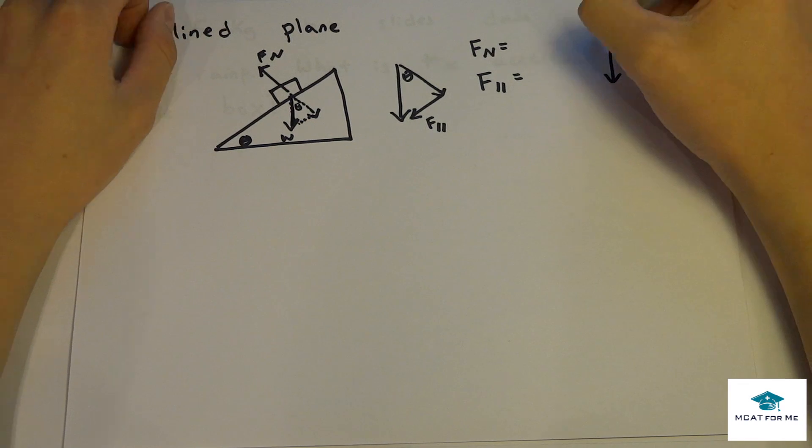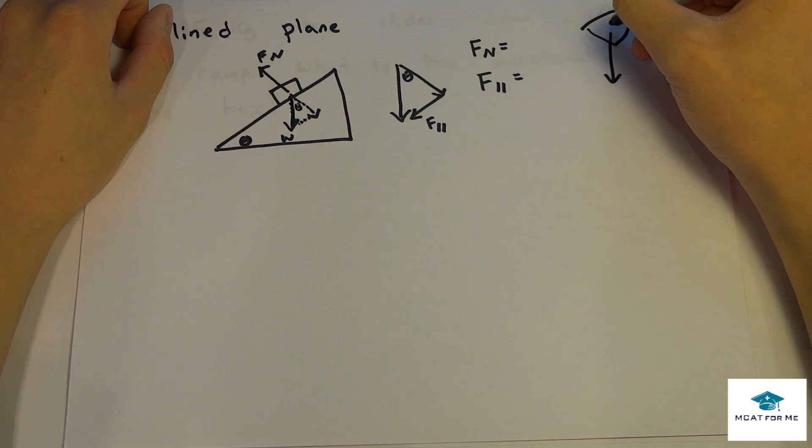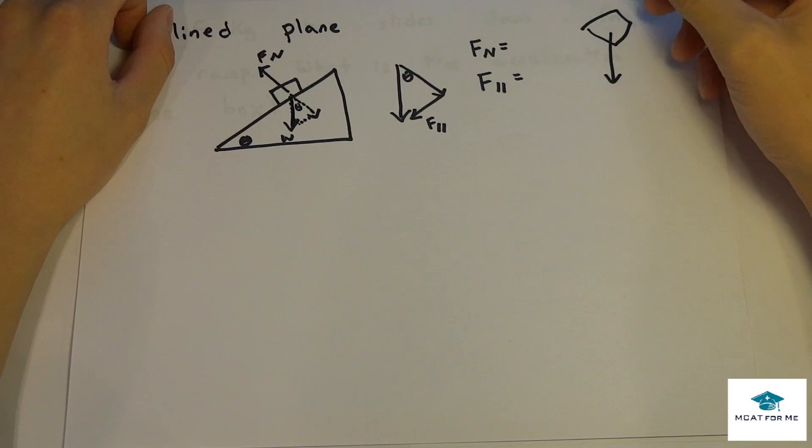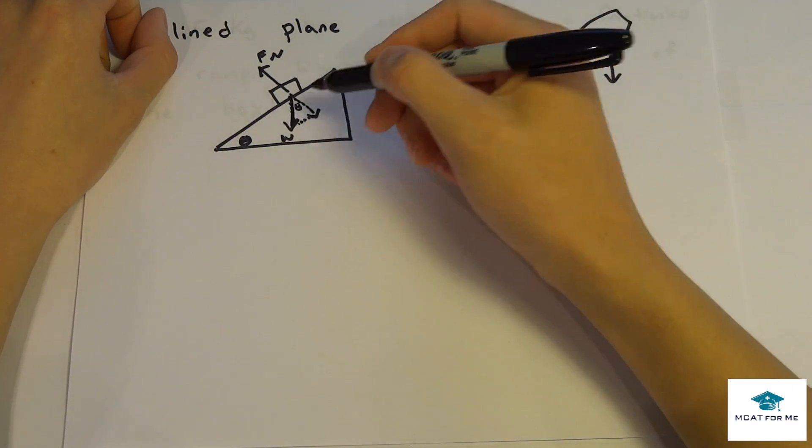Weight is always up and down, even if the object is angled like that, the weight is still going to be vertical, perfectly straight. So we know weight is like that.